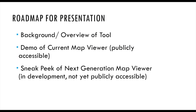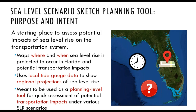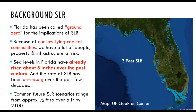The purpose of the Sea Level Scenario Sketch Planning Tool is as a starting place to assess the impacts of sea level rise on the transportation system. The tool maps where and when sea level rise is projected to occur in Florida and the potential transportation impacts. It uses local tide gauge data from NOAA to show regional projections, and is meant to be used as a planning-level tool for quick assessment of potential transportation impacts under various scenarios of sea level rise.